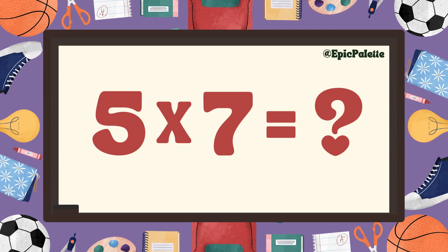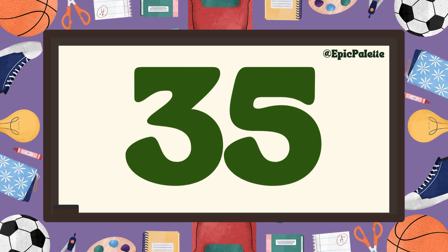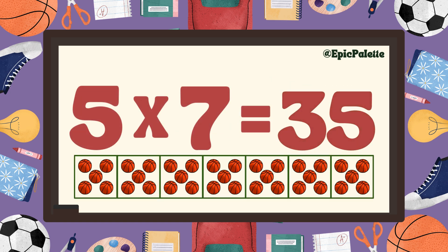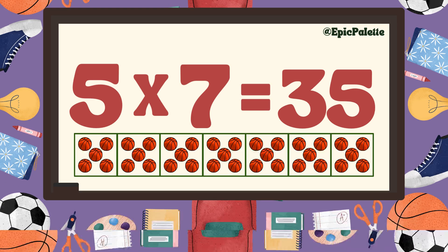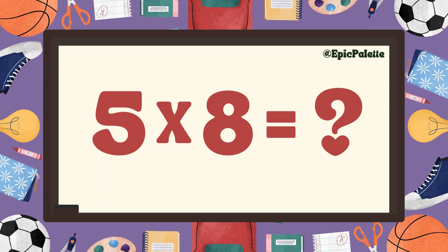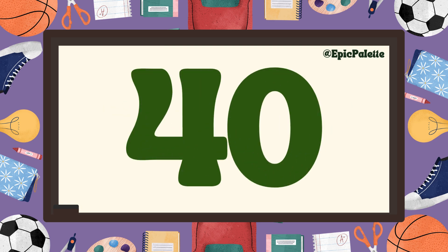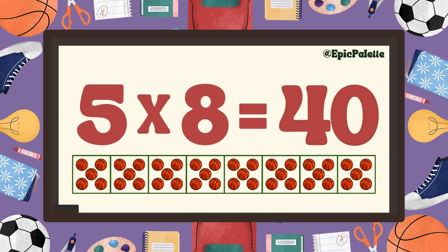Five times seven equals... Thirty-five. That's right. Five times seven equals thirty-five. Fantastic. You're doing great. Five times eight equals forty. Five times eight equals forty.